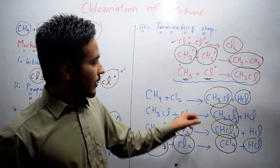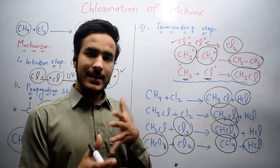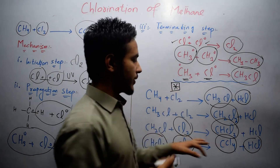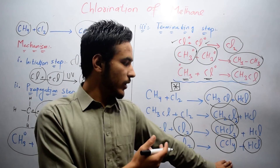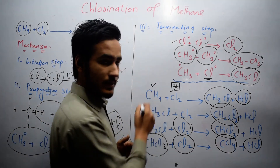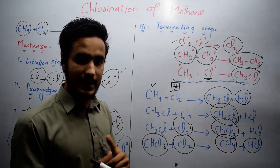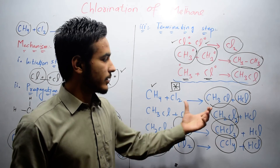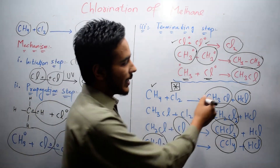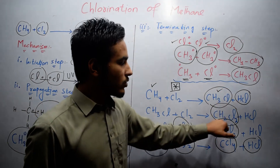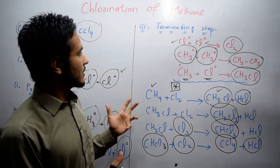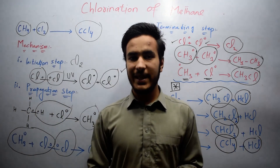If Cl2 is in excess in the reaction, the whole reaction will go to completion, producing CCl4 — that is known as total synthesis. If CH4 is in excess and Cl2 is not in excess, the reaction will not go to completion and will partially stop, giving products such as CH3Cl, CH2Cl2, or CHCl3. This was the whole mechanism of chlorination of methane.